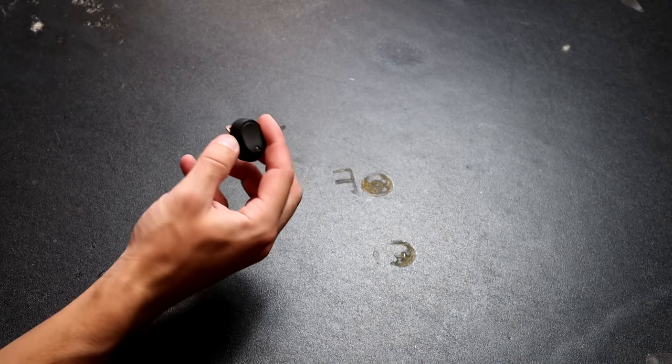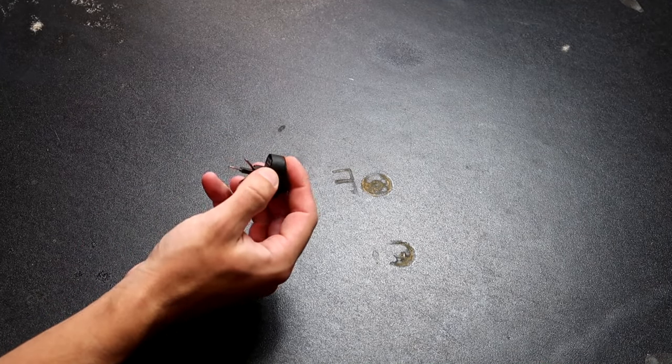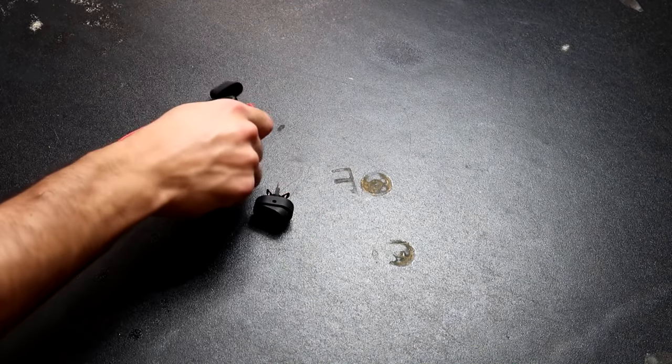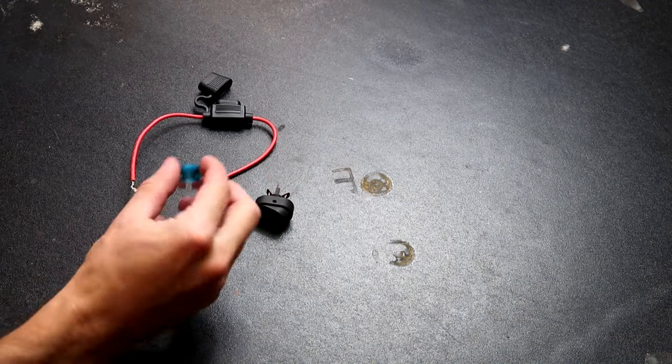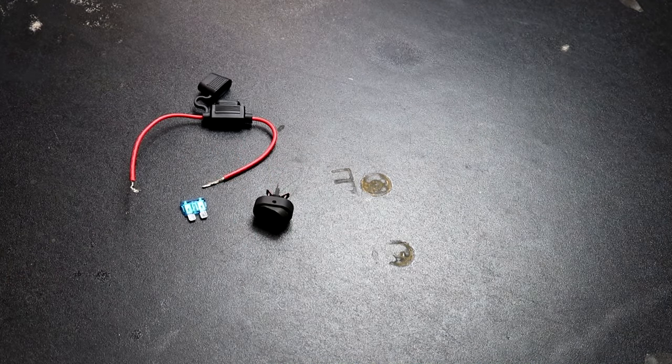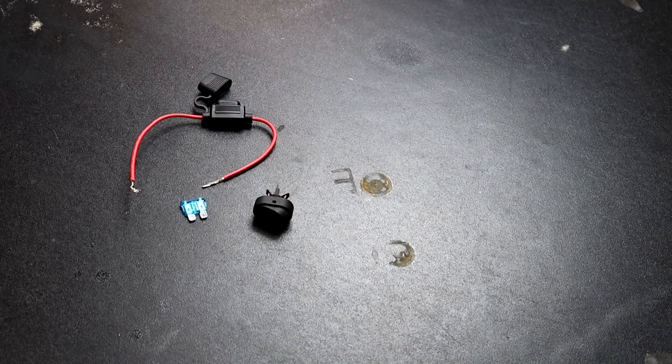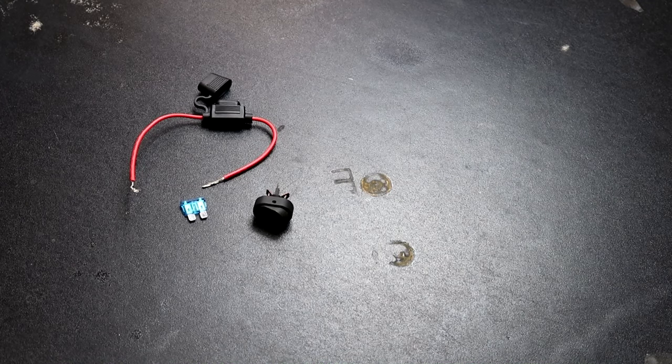I'm going to show you guys how to wire up one of these three-prong LED rocker switches. What you're going to need is your switch, fuse holder, and your fuse. This is a 15 amp fuse, 15 amp because I usually use 16 gauge wire for most of my wiring.